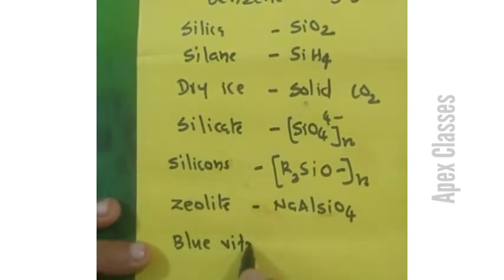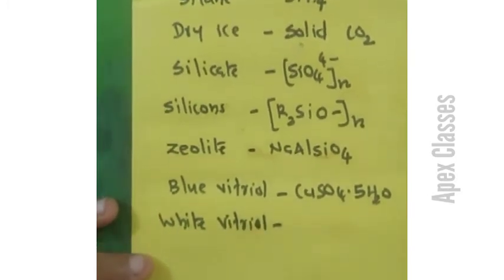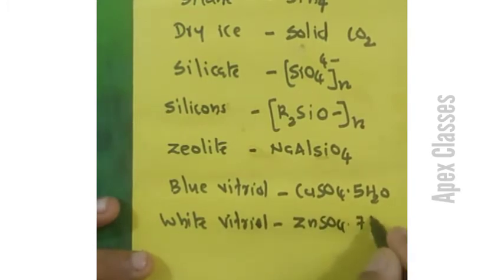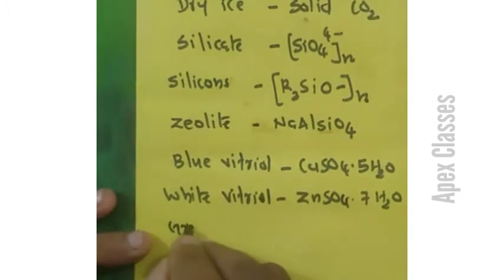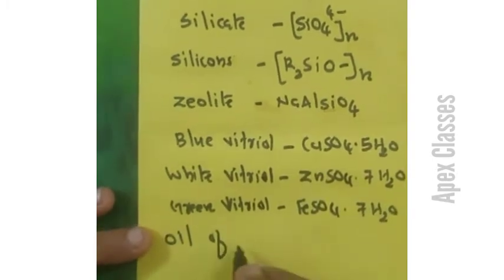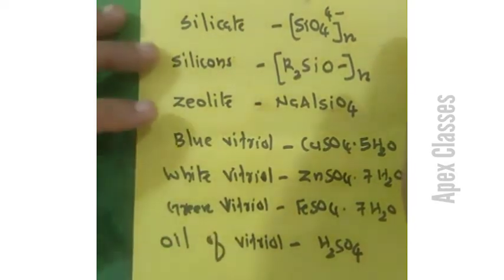Blue Vitriol is CuSO4·5H2O. White Vitriol is ZnSO4·7H2O. Green Vitriol is FeSO4·7H2O. Oil of Vitriol is sulfuric acid.